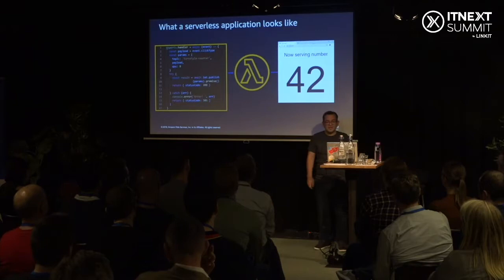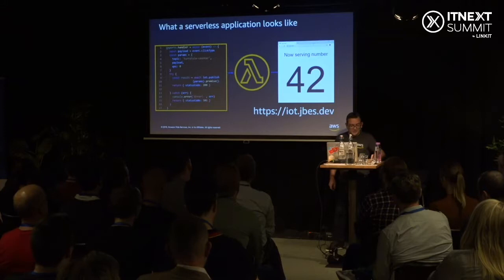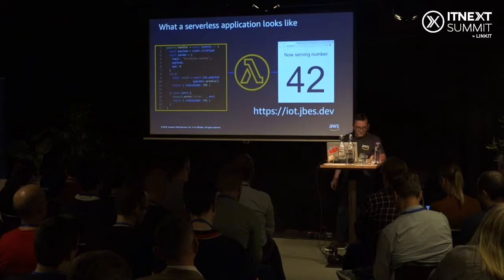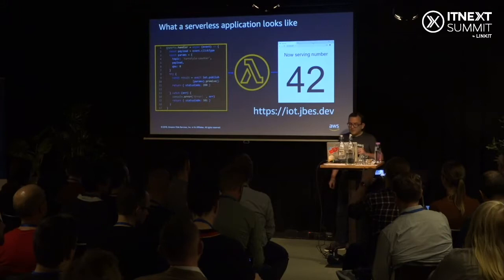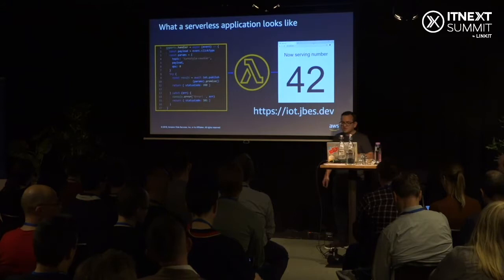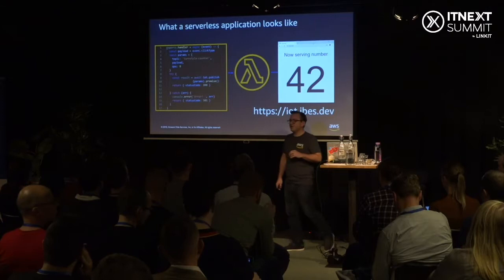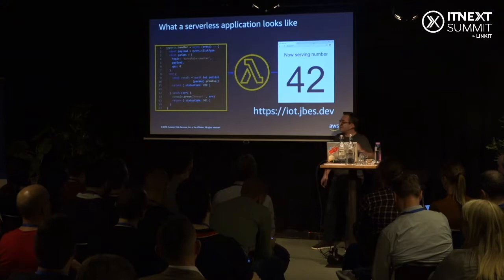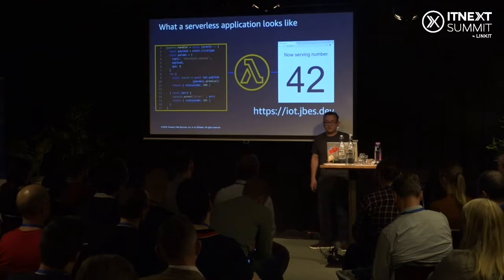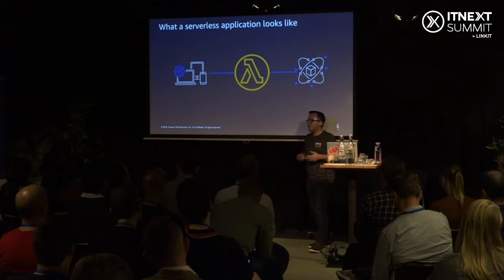I also wired up a front end to this IoT button. If you go to that website you can see that every time I press the button it increments a number — like a now-serving number for a deli. We just built an IoT app in about 17 lines of code for the Lambda and maybe 30 for the front end, and now we have a fully scalable app that could open a garage door, turn on a light, or anything else.